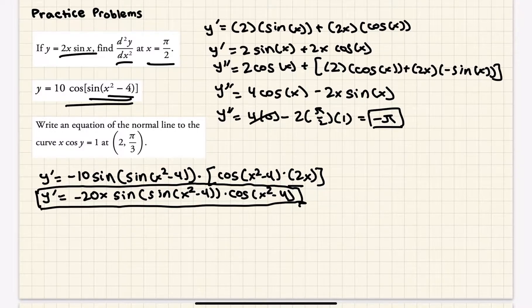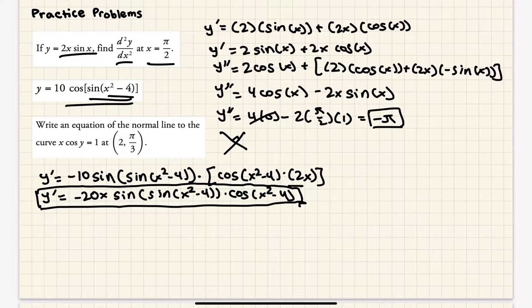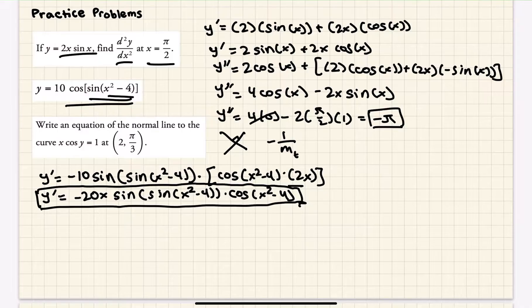Finally, write an equation of the normal line to the curve x cosine y equals 1 at the point 2, pi over 3. We didn't explicitly discuss normal lines, but the slope of the tangent line is the derivative, and the normal line is perpendicular to the tangent line at that point. So its slope is negative 1 over the tangent line slope — the negative reciprocal. This is an implicit function, so we use implicit differentiation.